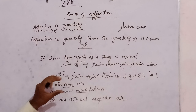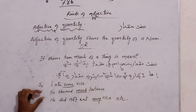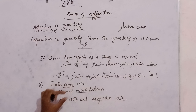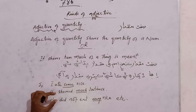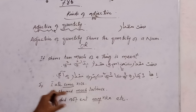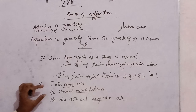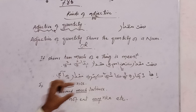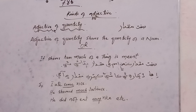In the same way, the underlined word in the second sentence is also an adjective of quantity. The example is: 'Show much patience,' meaning keep as much patience as possible.